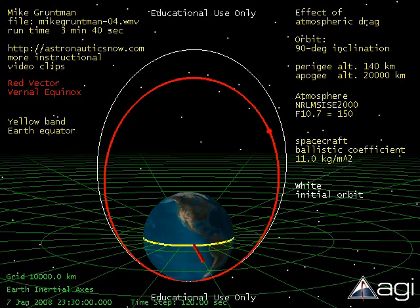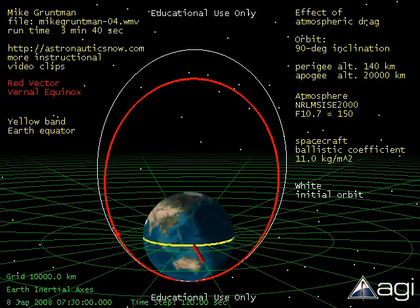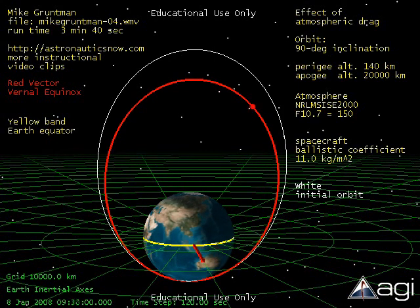As you can see, after 8 days in orbit, the apogee lowered by 5,000 km from 20,000 km altitude to 15,000 km altitude.